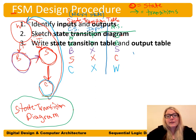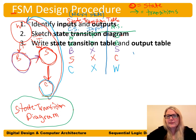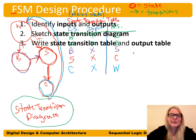We're done — we've completely specified what our finite state machine does using this table. Now we need to build this in digital logic, and digital logic understands ones and zeros, so we have letters that need to be encoded.